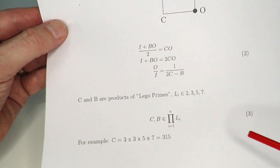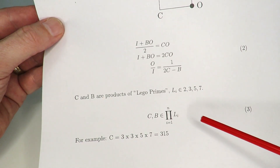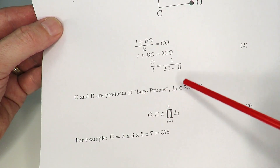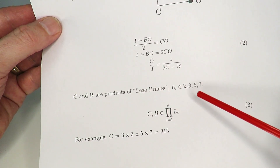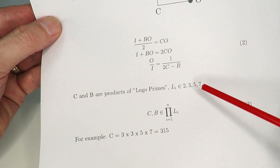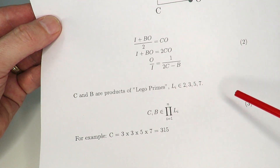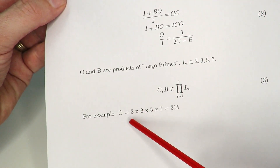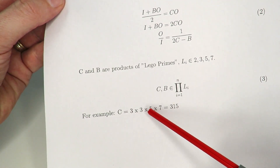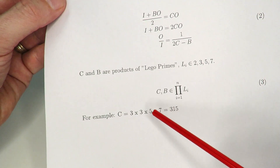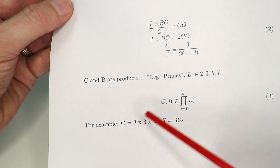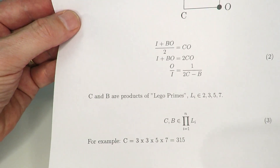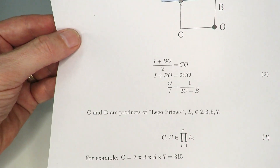C and B are what I call products of Lego prime — they have to be products of 2, 3, 5, and 7. For example, C could be 3 × 3 × 5 × 7, and similarly for B.